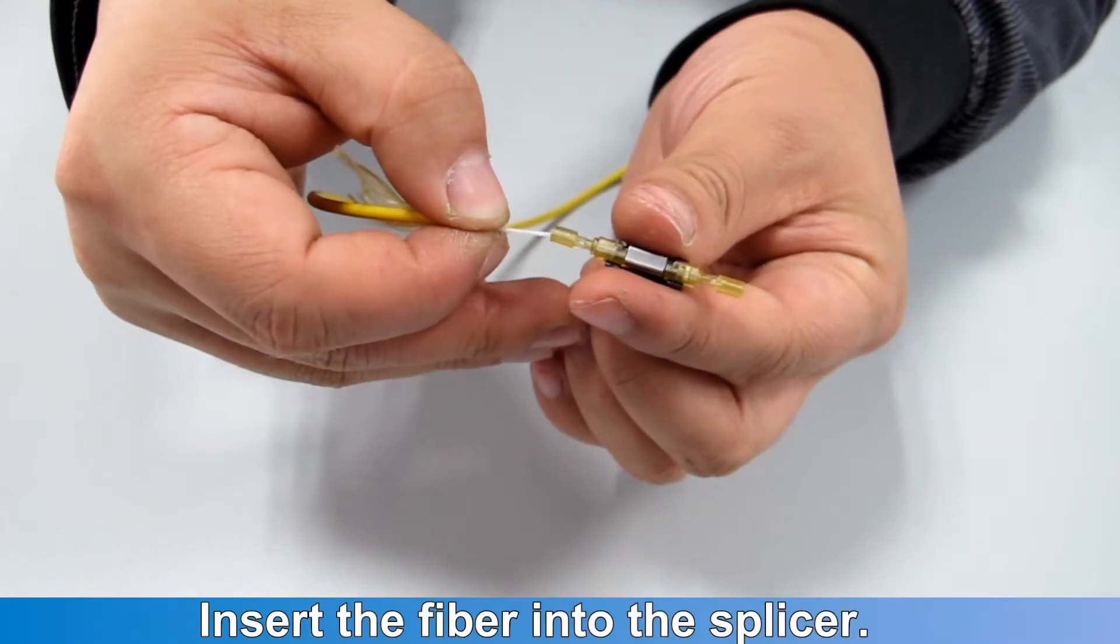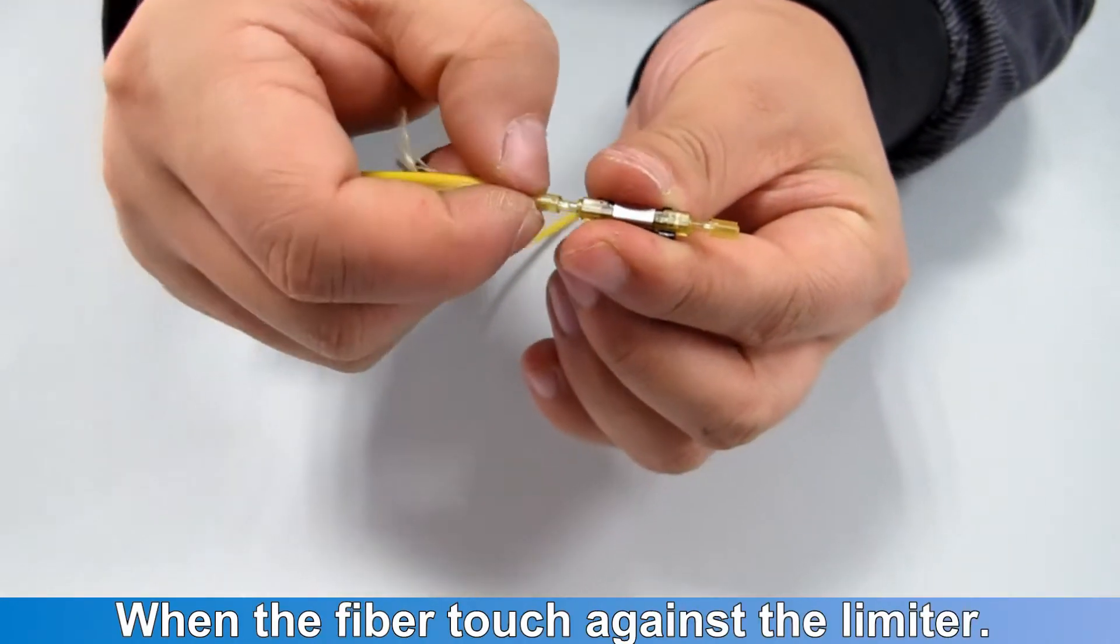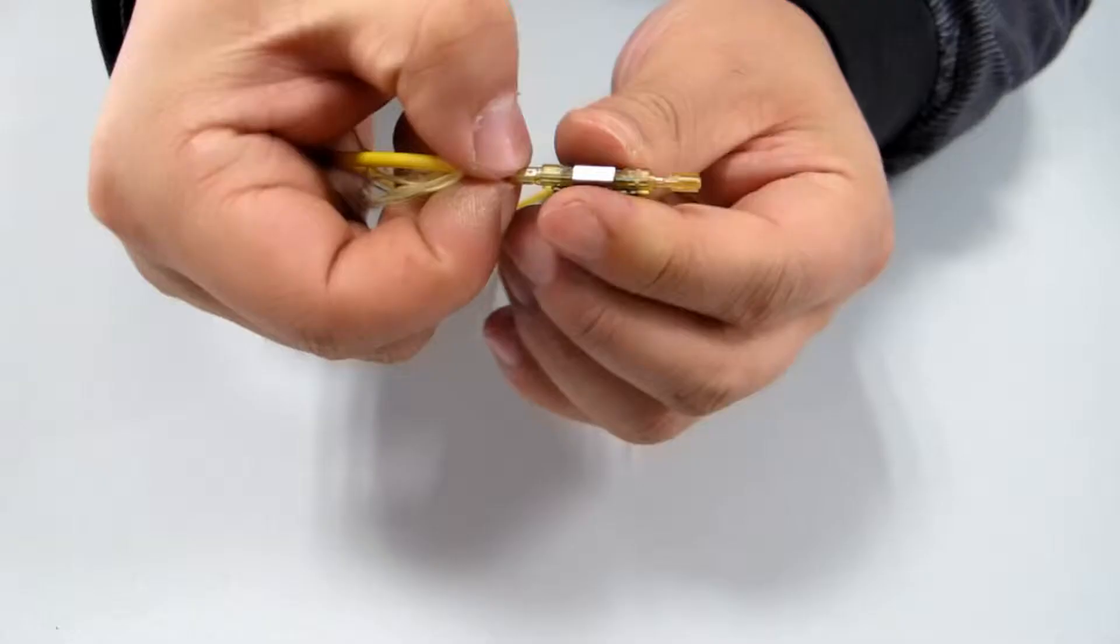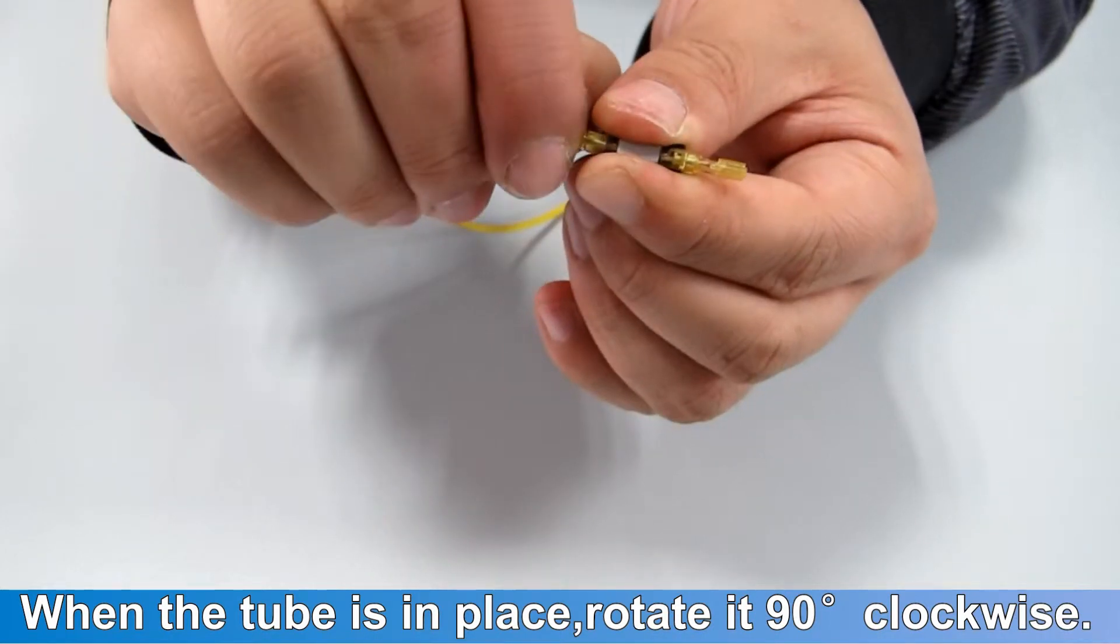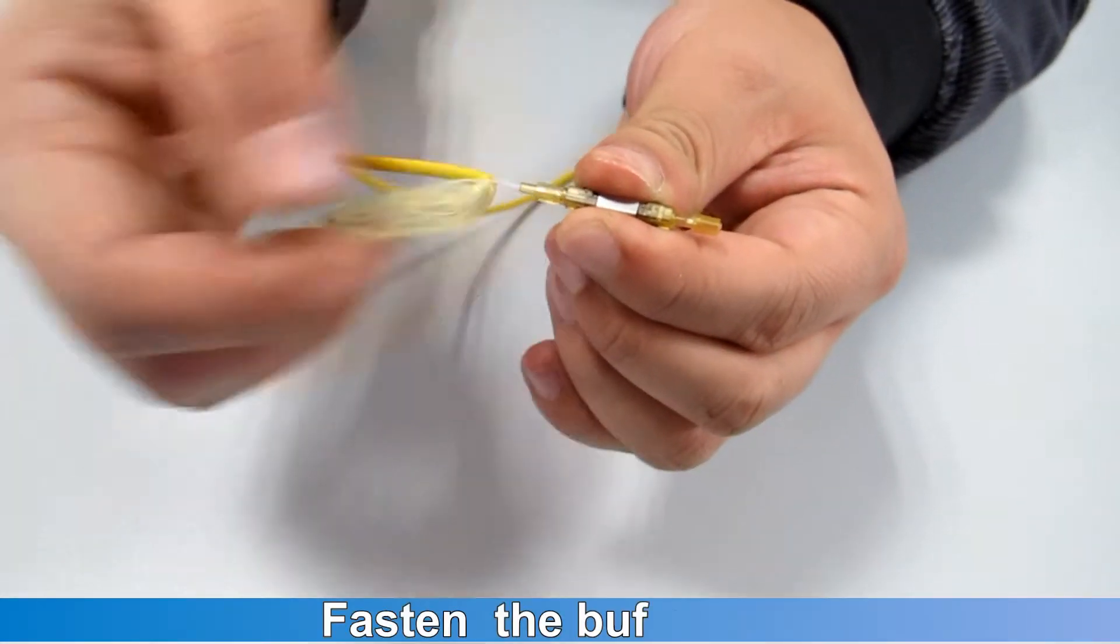Insert the fiber into the splice. When the fiber touches against the limiter, push forward the tube. When the tube is in place, rotate it 90 degrees clockwise. Fasten the buffer.